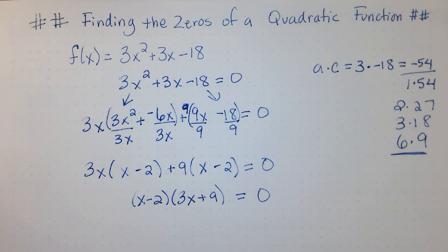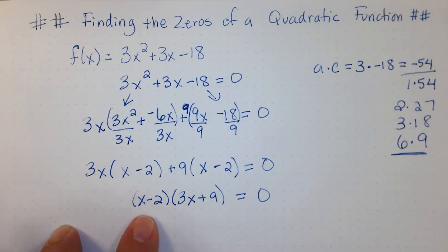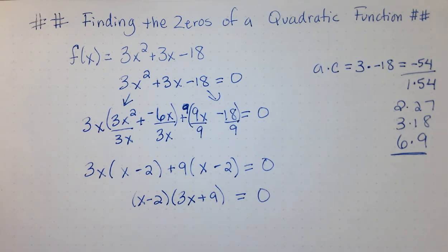Again, because this is factored and this is multiplication, you could write this either way. So, you could put the 3x plus 9 first and then the x minus 2 second, as long as you kept the signs and the numbers with each factor. Because we're solving this equation, we do need to keep going and set each one of these factors equal to 0.